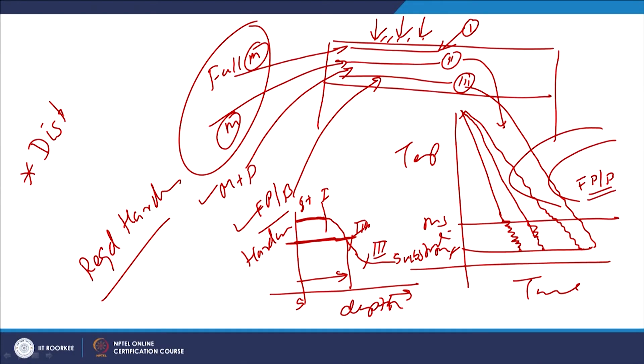The flame hardening method is somewhat slower and takes longer. Since a greater amount of heat is applied to the components, there is a possibility of distortion of components subjected to flame hardening.